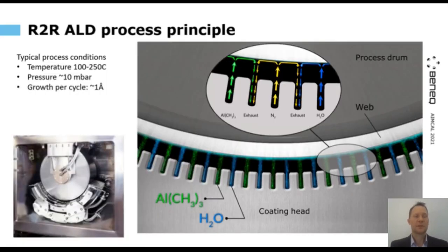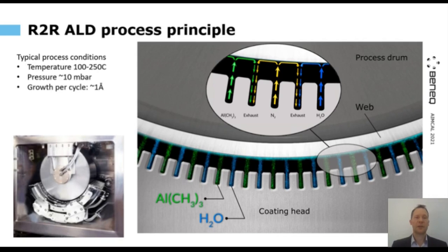So, what is ALD? On the left side picture, you see a drum, and below the drum, there is what we call a coating head. The other picture shows a zoom in to the coating head, which is composed of multiple nozzles in series. There are several nozzles that are connected to two different chemicals. When the web is tensioned on the drum and the drum is rotating, the web is being transferred through this coating section under the coating head. The web travels through the coating head and is exposed to two chemicals, one at a time, separated by a purge in between.